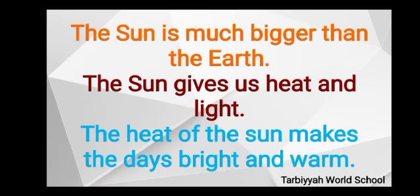The sun is much bigger than the earth. It looks small because it is very far from us. The sun gives us heat and light.